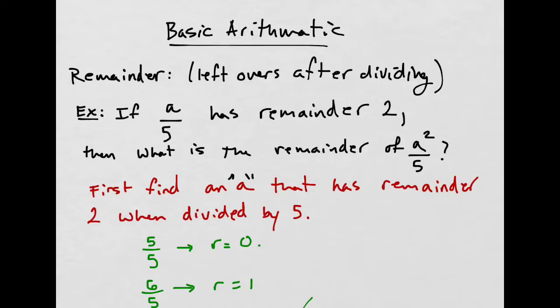Remember, an integer is a number like 1, 2, 3, 4, 5, or 0, 1, 2, 3, 4, 5, or the negatives, negative 1, 2, 3, 4, 5, and so on.